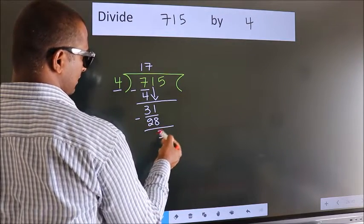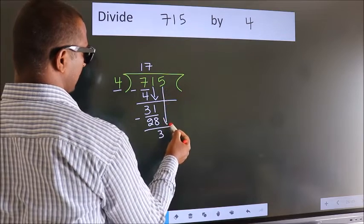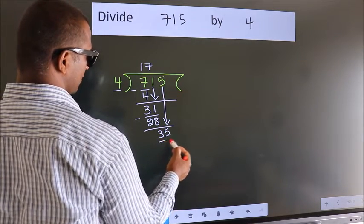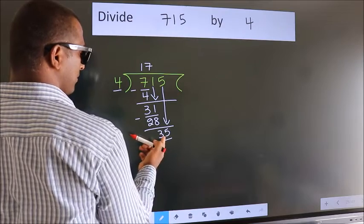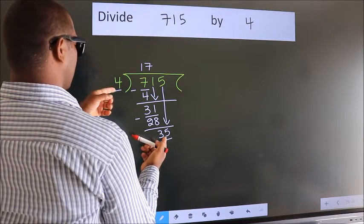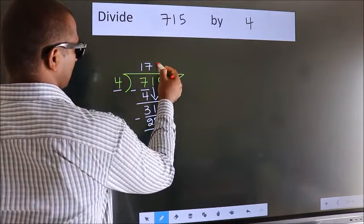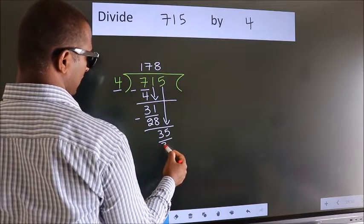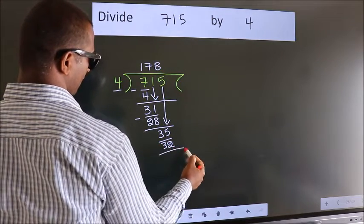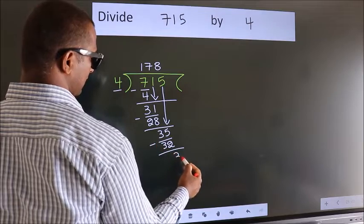After this, bring down the beside number. So 5 down. So 35. A number close to 35 in 4 table is 4 eights, 32. Now we subtract. We get 3.